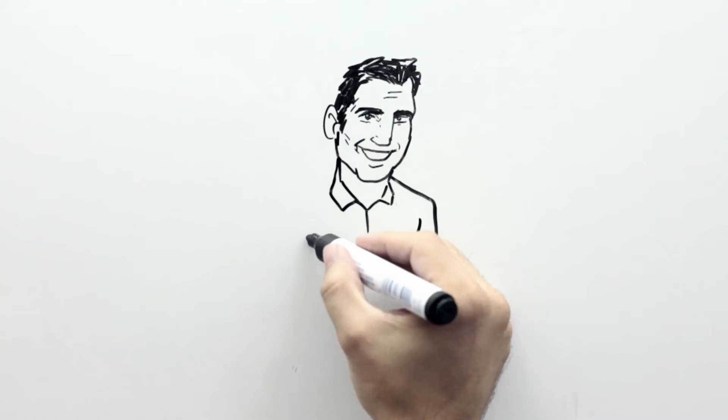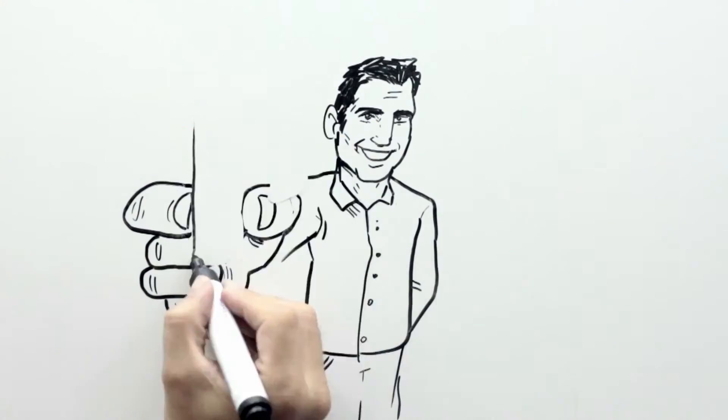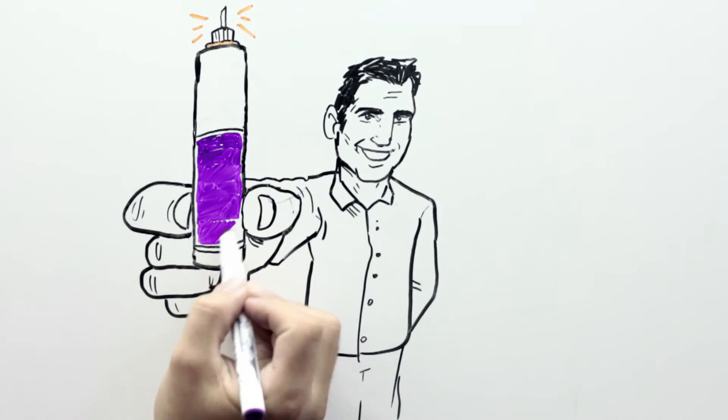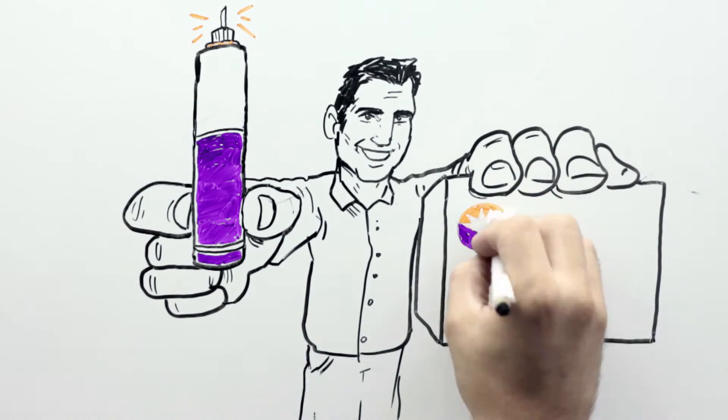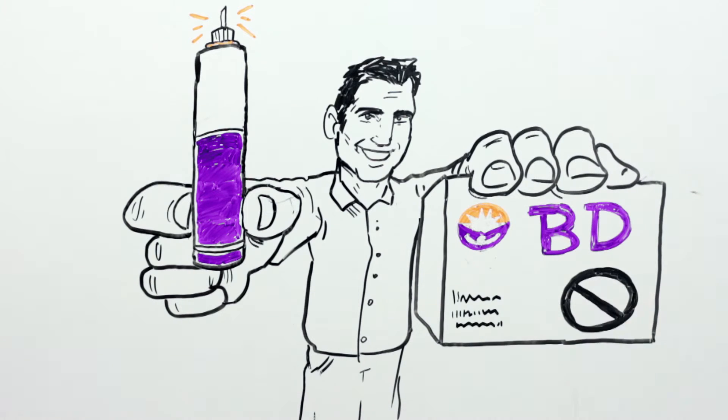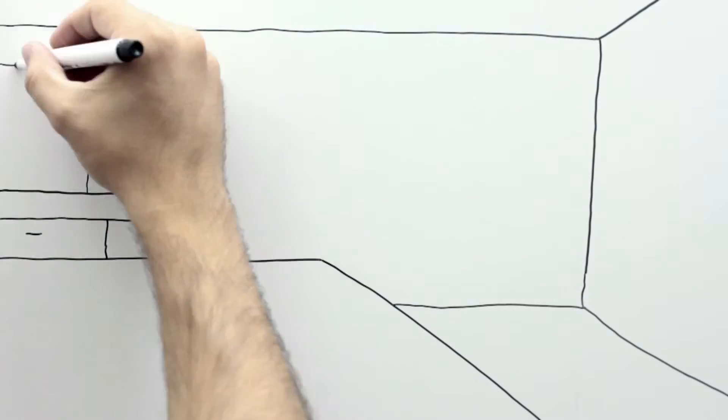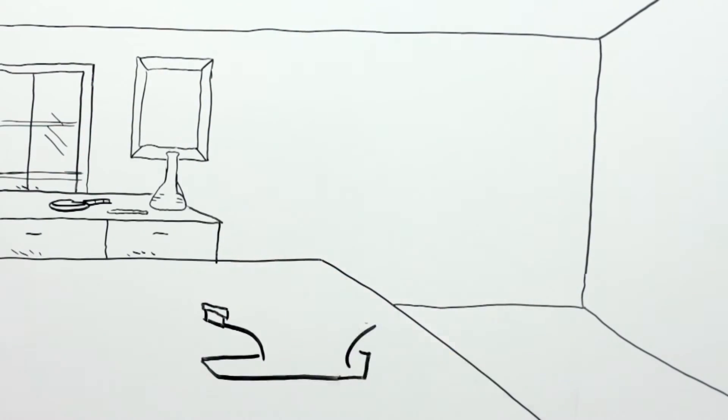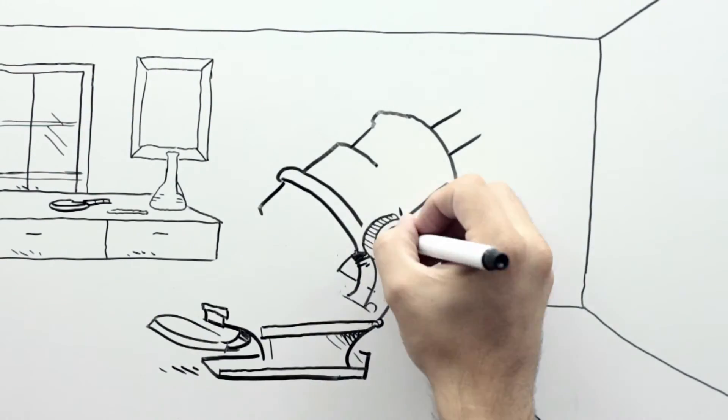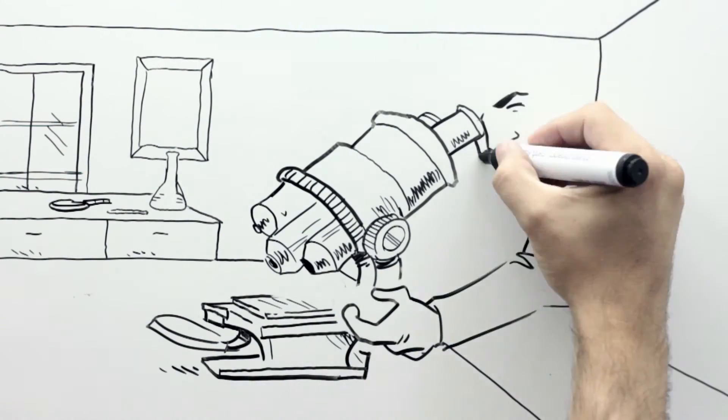According to the study conducted in Spain, another cause of the development of lipos is reuse of the insulin pen needle. The boxes of pen needles display this special symbol, which indicates they are for single use only. When you reuse a needle, the tip becomes damaged and injures your fatty tissue, which promotes the development of lipos.